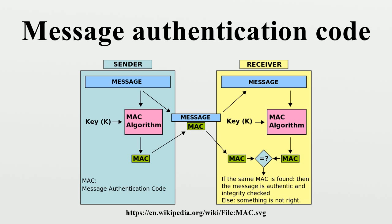However, to allow the receiver to detect replay attacks, the message itself must contain data that assures that this same message can only be sent once. Otherwise an attacker could, without even understanding its content, record this message and play it back at a later time, producing the same result as the original sender. One-time MAC: universal hashing, and in particular pairwise independent hash functions, provide a message authentication code as long as the key is used at most once. This can be seen as the one-time pad for authentication. The simplest such pairwise independent hash function is defined by the random key, and the MAC tag for a message is computed as a linear function where the modulus is a prime.